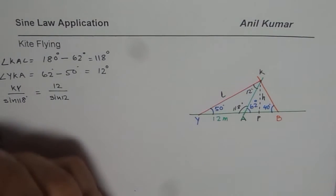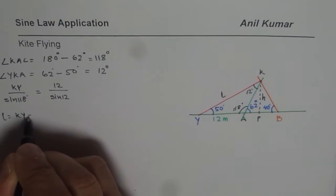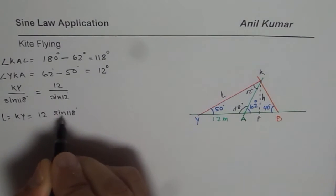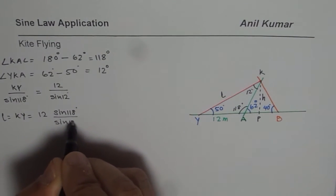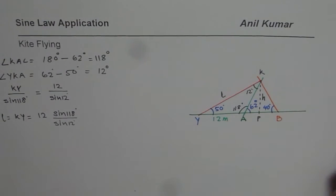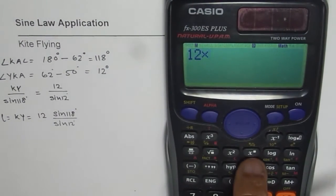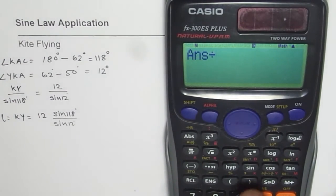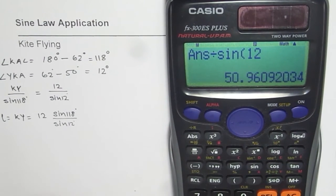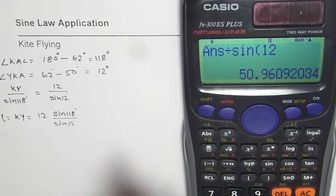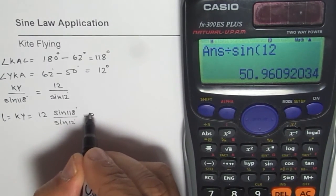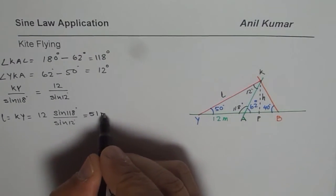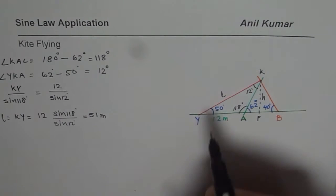From here, the length KY equals 12 times sine of 118 degrees, divided by sine of 12 degrees. Using the calculator: 12 times sine of 118, then divided by sine of 12, gives us 50.96, which we round to 51 meters. So the length of the string is 51 meters.